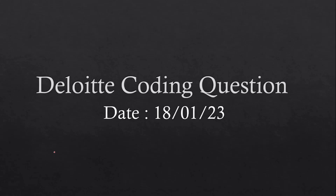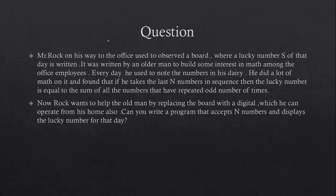Friends, welcome to the new video. In this video I am going to discuss another delayed coding question. This question came on 18 January. Let's start. So this is our question. Mr. Roe on his way to the office used to observe a port where a lucky number of that day is written.